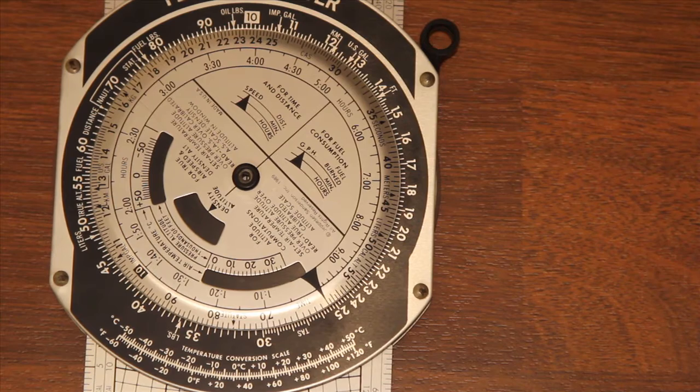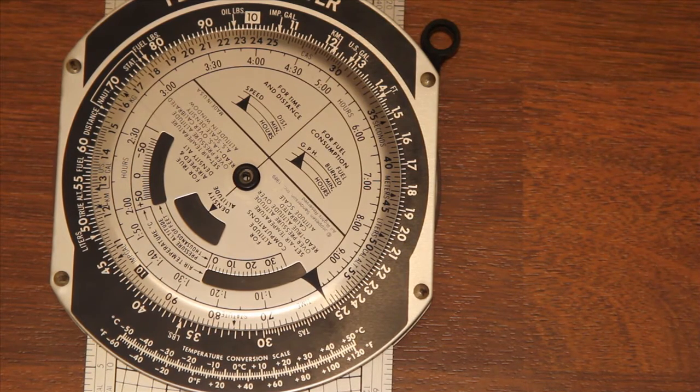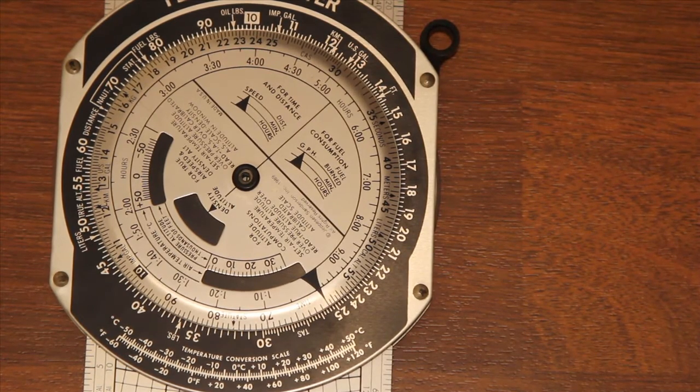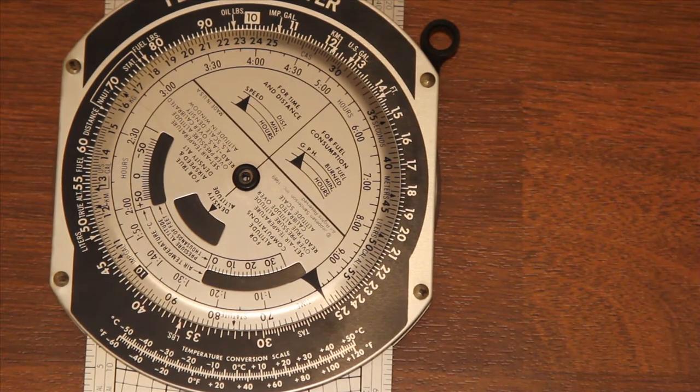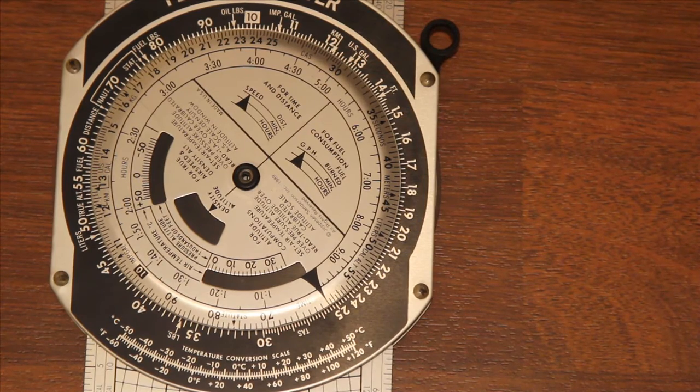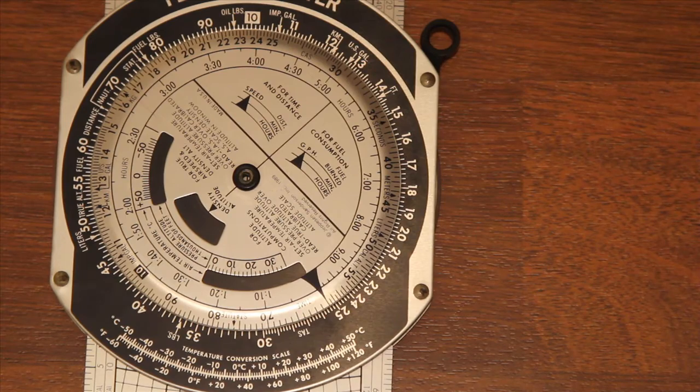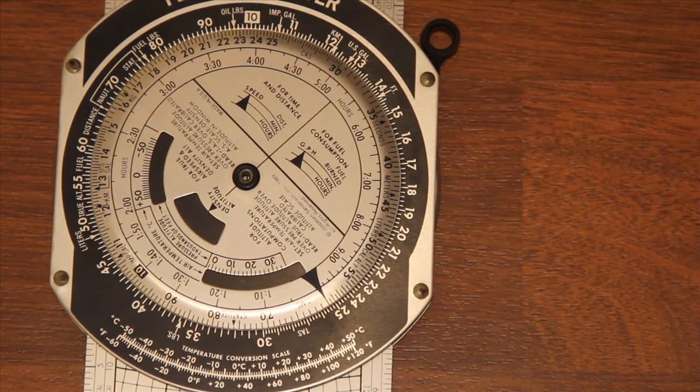If you remember your school mathematics, you'll know that distance equals speed times time. So this circular slide rule will do that calculation for you without you having to calculate it. And I'll show you how to do it for calculating distance, for calculating speed, and for calculating time.